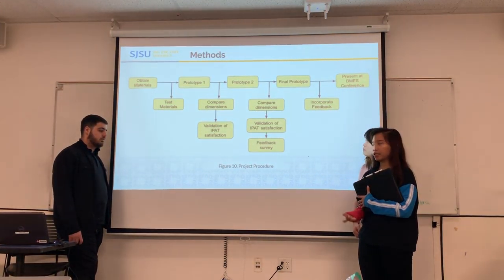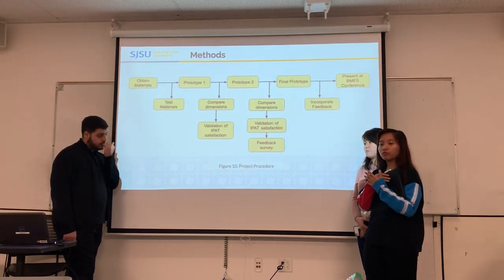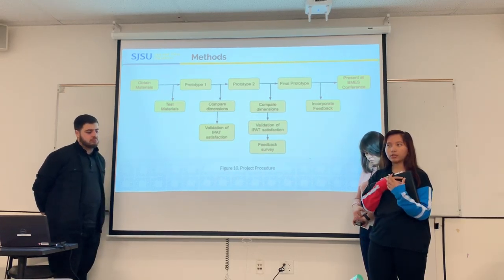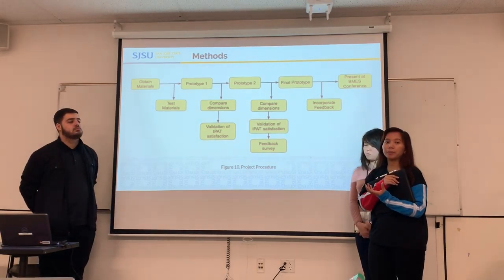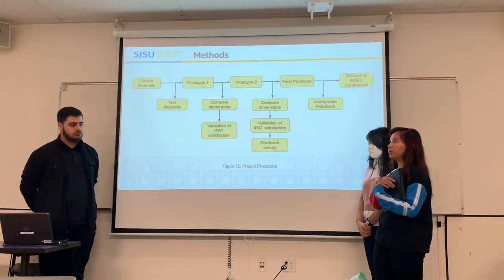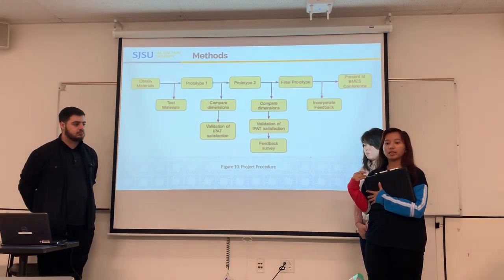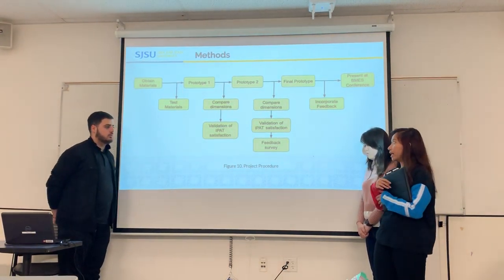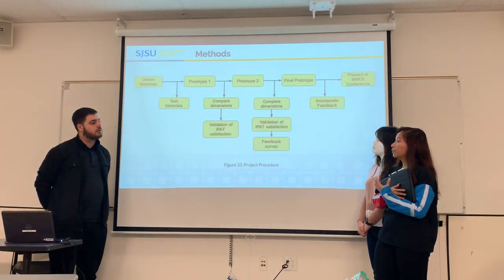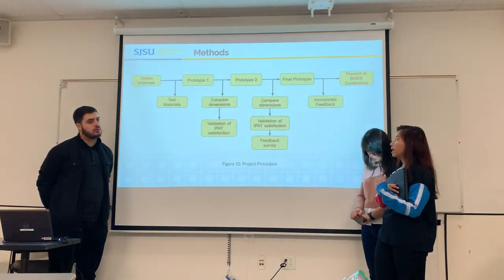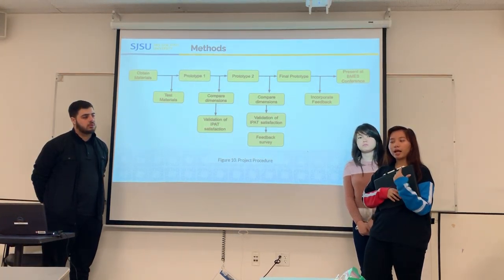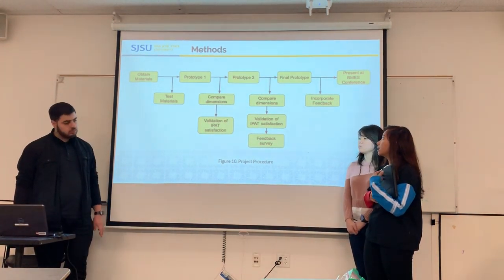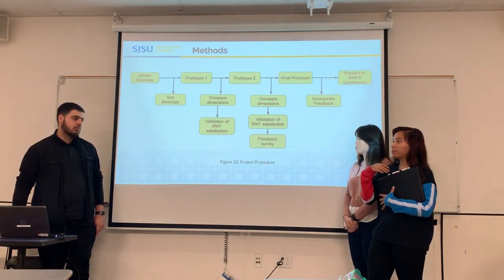Our first prototype was super basic — just for us to grasp a better concept of what materials we're looking for and how to obtain the range of motion that we want. After creating the first prototype, we compared it with the dimensions of a real infant, got feedback from ourselves and our advisors, and double-checked how well it works with IPAT guidelines. The biggest issue was it was too big, which led us to our second prototype. With the second prototype, we compared dimensions with an actual infant, checked IPAT guidelines, talked with our advisors, and were successful enough to get feedback surveys from nursing students at SJSU. We also implemented that feedback into our final prototype, which we presented at the BMS conference.